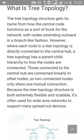Tree topology has a structure like a tree — just as a tree has many branches, in tree topology all devices are connected within a network in a branch-like fashion. The tree topology gets its name from how the central node functions as a sort of trunk for the network, with nodes extending outward. Unlike star topology where each node is directly connected to the central hub, tree topology has a parent-child hierarchy to how the nodes are connected.